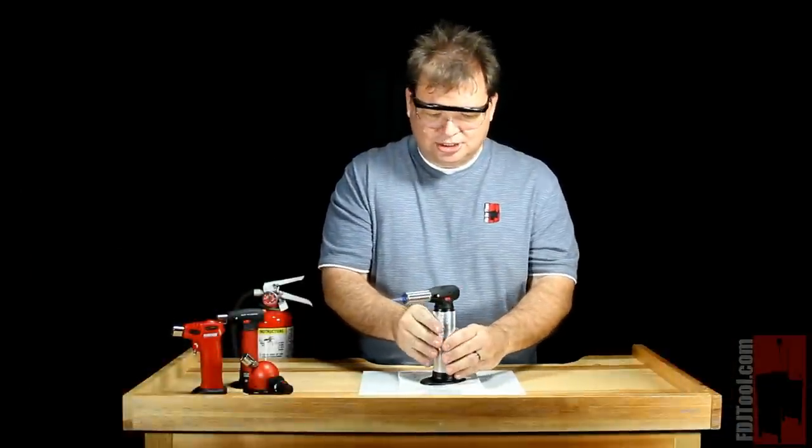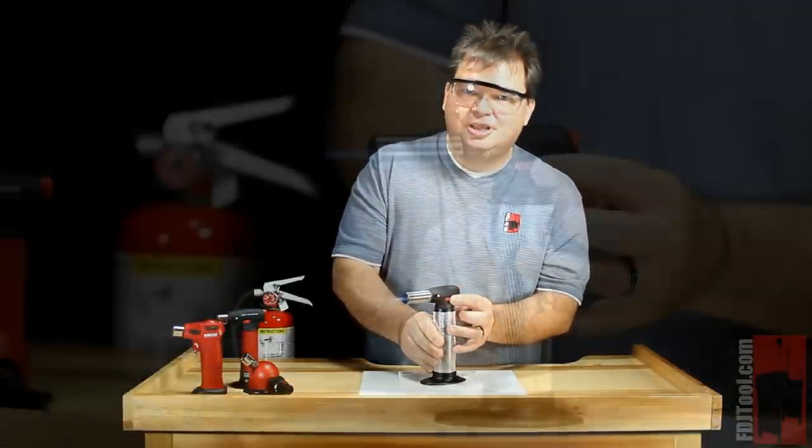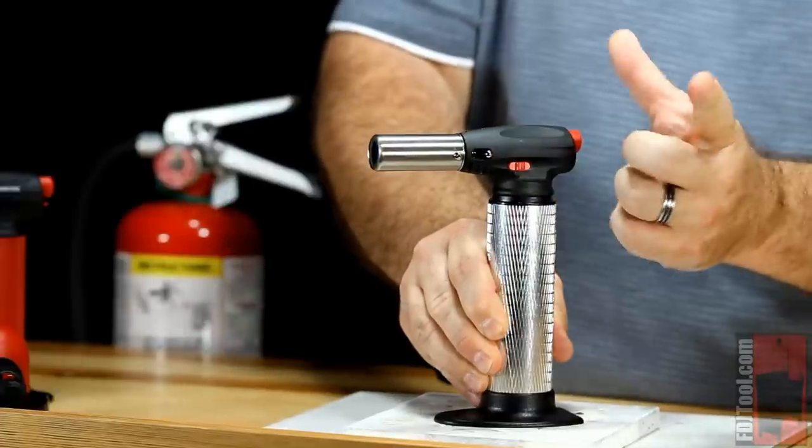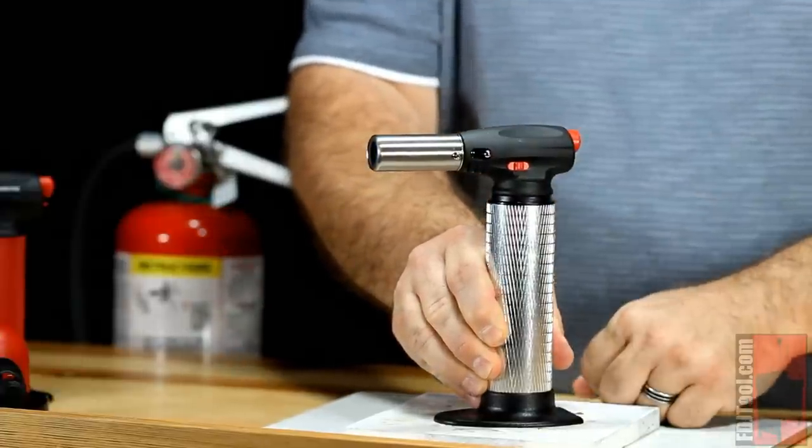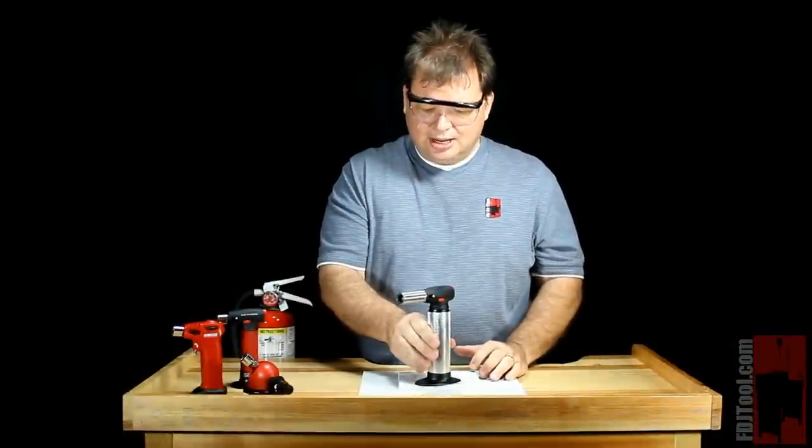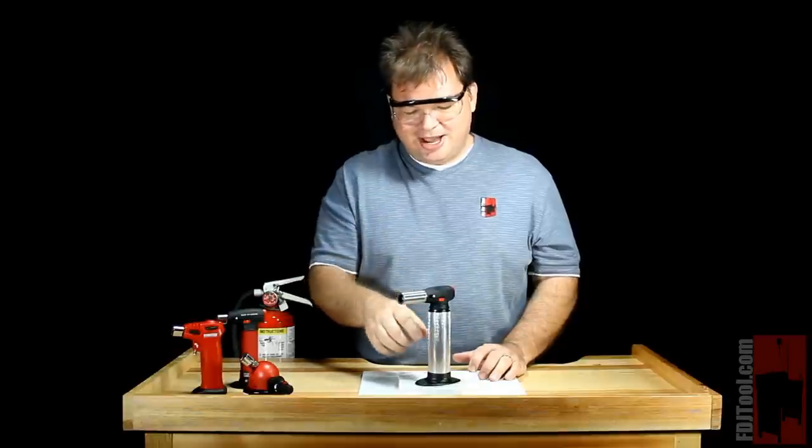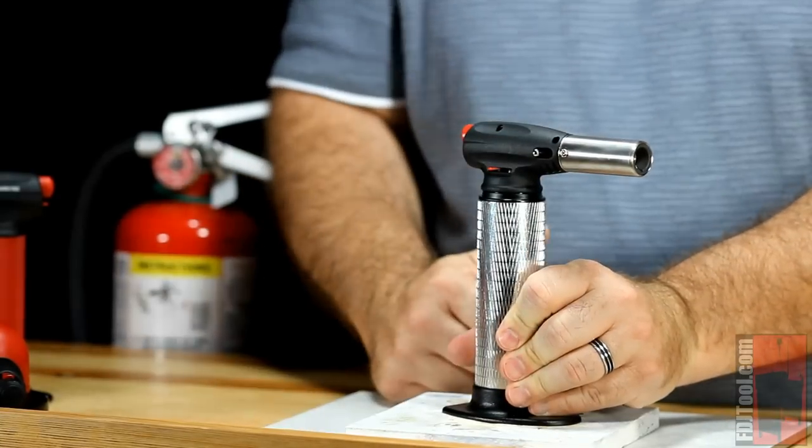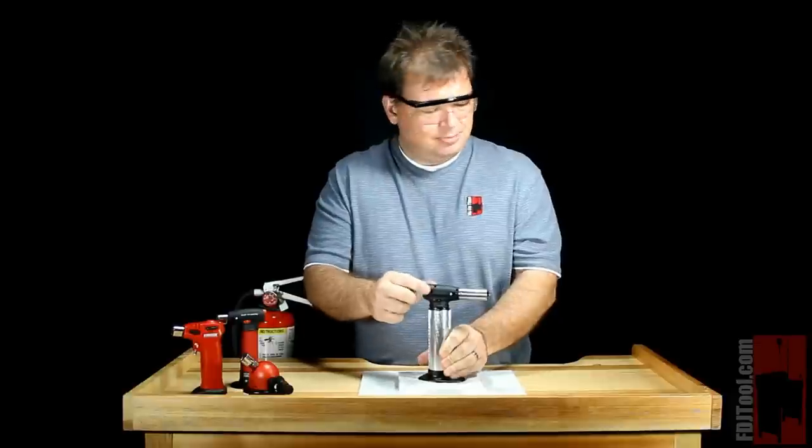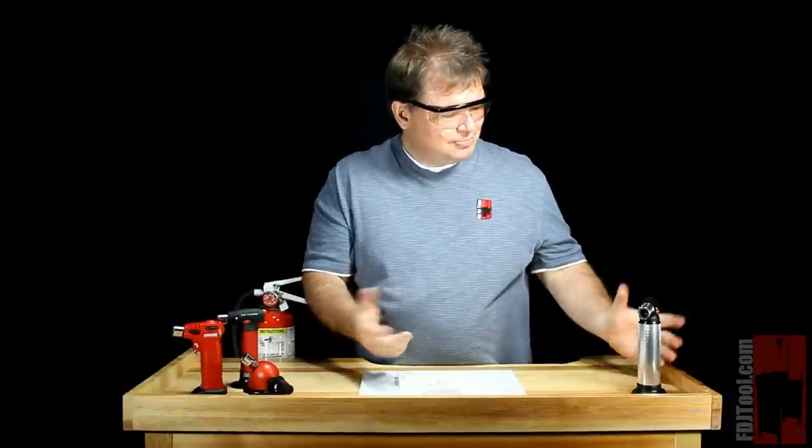Now when you're done with your torch, simply turn it off by pushing the continuous flow lever forward. It turns off your ignition button, your torch is off. Remember, your nozzle is very hot, so if you put it anywhere on your bench, just remember that. And if you're done completely with your torch, go ahead and turn your gas flow lever all the way back and put it safely away, and you're done.